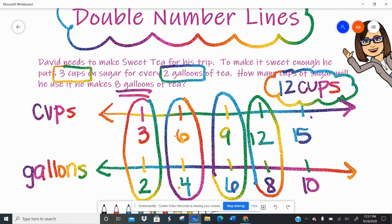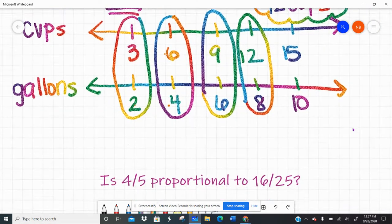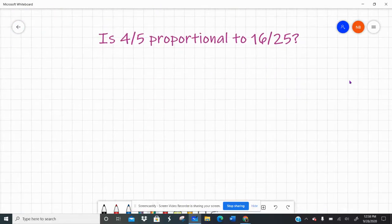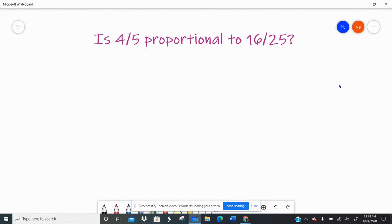So you can use double number lines when you're creating those equivalent or proportional relationships. The main thing is you really want to line up your dashes so that you know what number belongs to which piece. That's super important. But what if it's not a word problem? What if it's just something like is 4/5 proportional to 16/25?